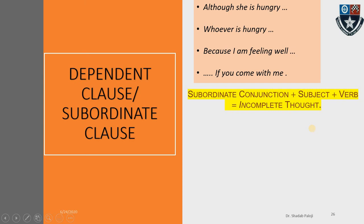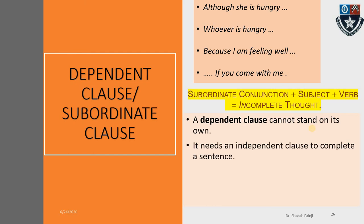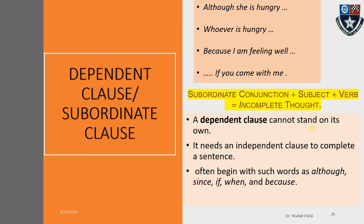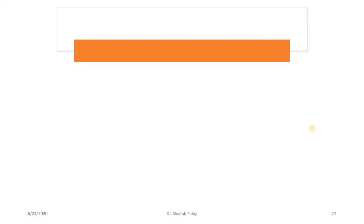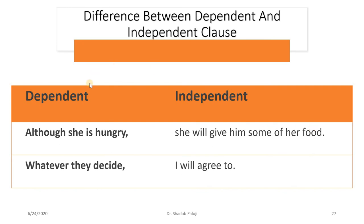A dependent clause cannot stand on its own. It needs an independent clause to complete a sentence and will often begin with words such as although, since, if, when, and because — which we call subordinate conjunctions. Examples showing the difference: 'Although she is hungry' — dependent; 'she will give him some of her food' — independent. 'Whatever they decide' — dependent; 'I will agree to it' — independent, a small statement but complete in itself.